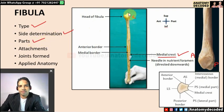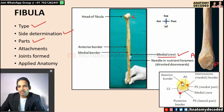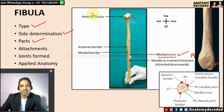The head gives a projection called the styloid process of the fibula. The shaft has three borders: anterior, posterior, and medial (which gives attachment to the interosseous membrane). The medial crest divides the posterior surface into two parts. To identify: trace the anterior border medially to find the medial border; trace the anterior border laterally to find the posterior border. Once the three borders are identified, the remaining feature is the medial crest.